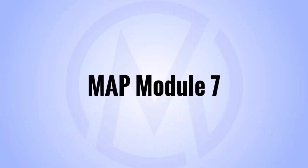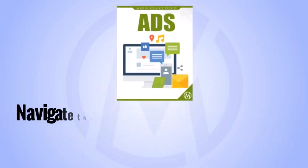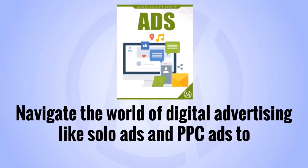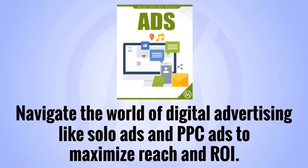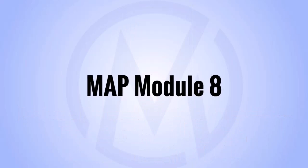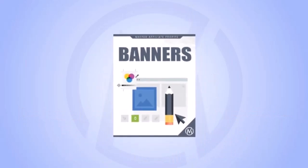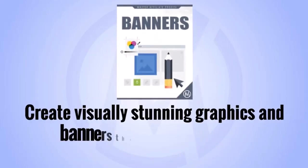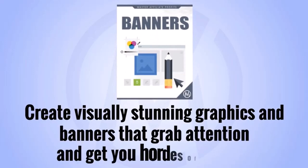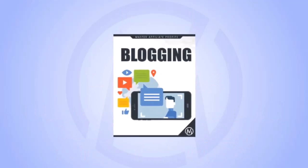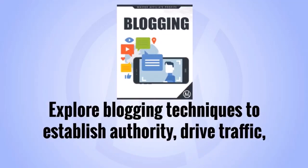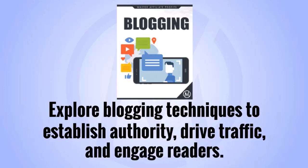MAP Module 6: Social Media — dive into effective social media strategies that build your list and foster a huge loyal following. MAP Module 7: Ads Marketing — navigate the world of digital advertising like solo ads and PPC ads to maximize reach and ROI. MAP Module 8: Banners and Graphics — create visually stunning graphics and banners that grab attention and get you hordes of clicks. MAP Module 9: Blogging — explore blogging techniques to establish authority, drive traffic, and engage readers.